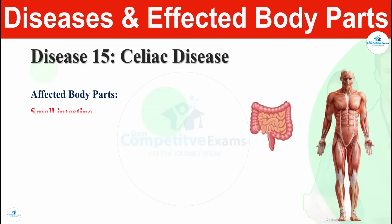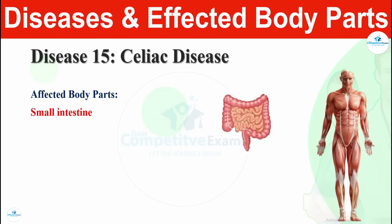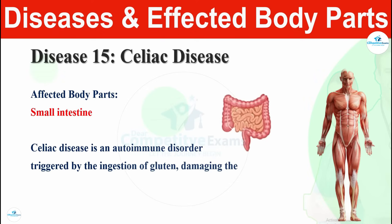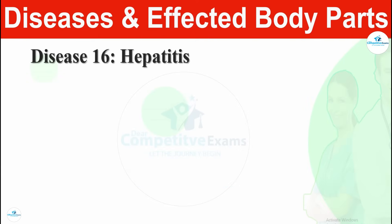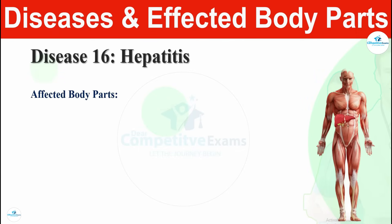Disease number fifteen is celiac disease. Celiac disease affects the small intestine. Celiac disease is an autoimmune disorder triggered by the ingestion of gluten, damaging the small intestine lining and impairing nutrient absorption. Celiac disease affects the small intestine.